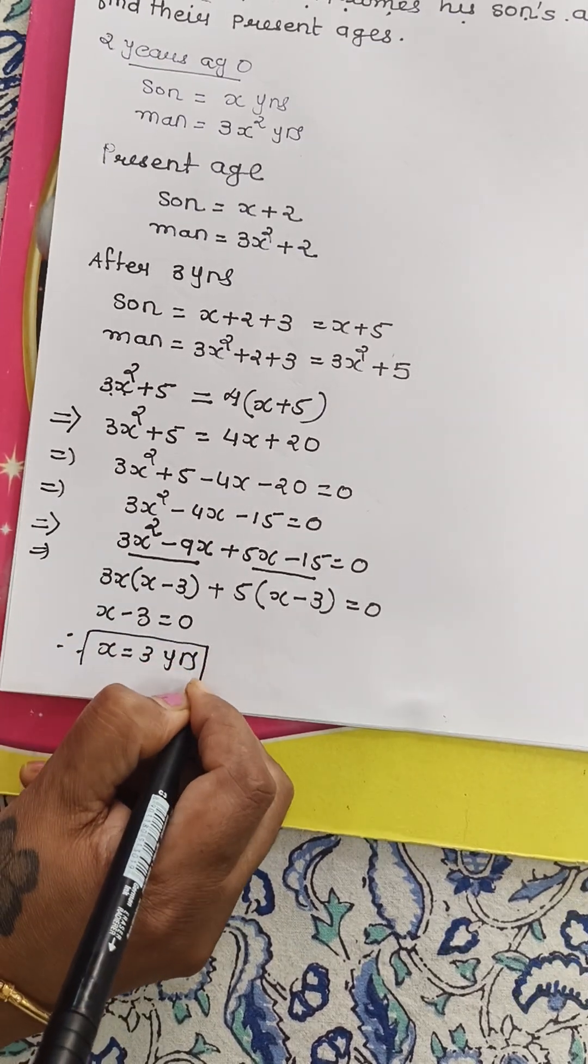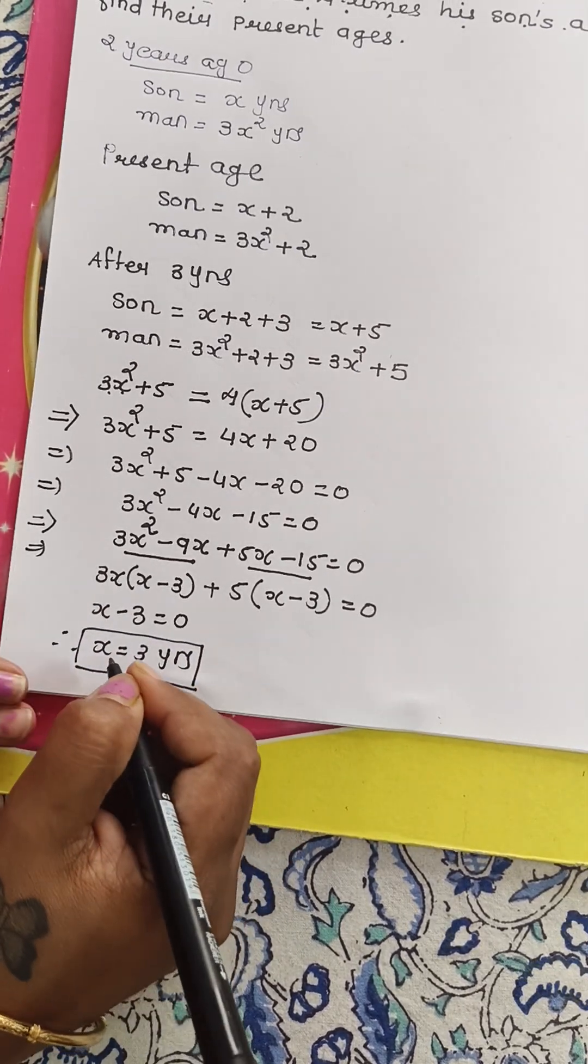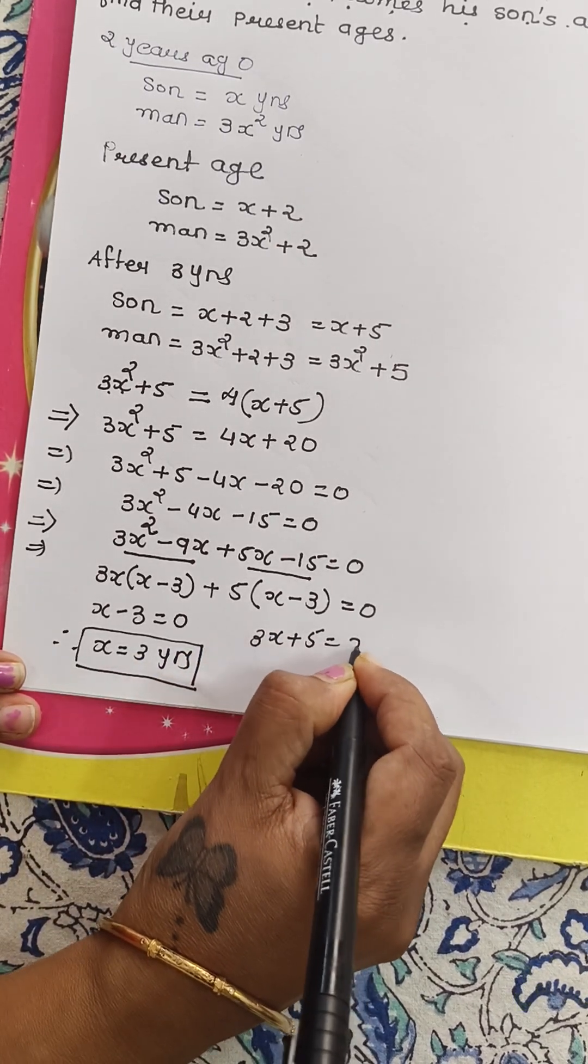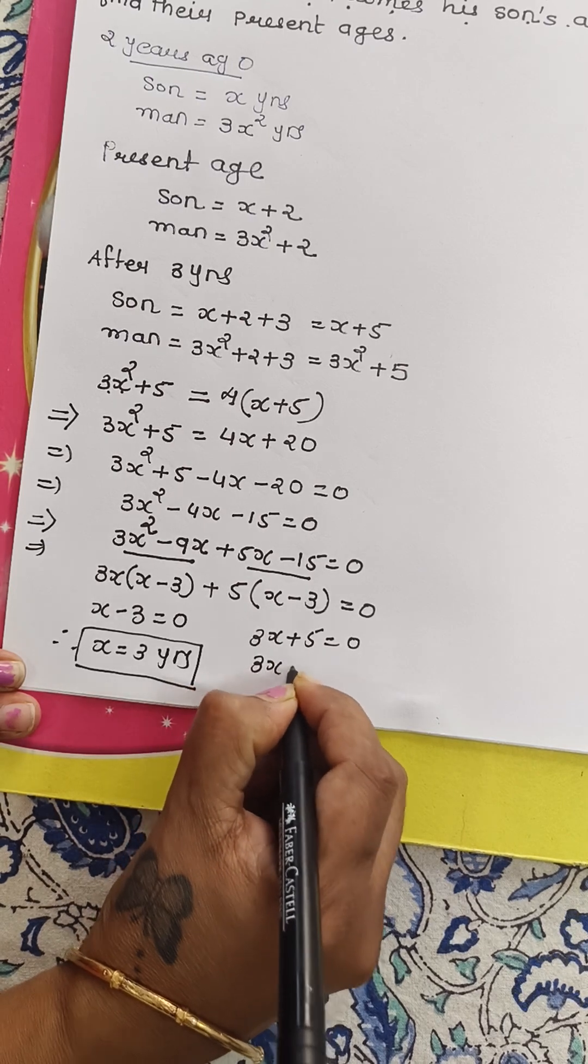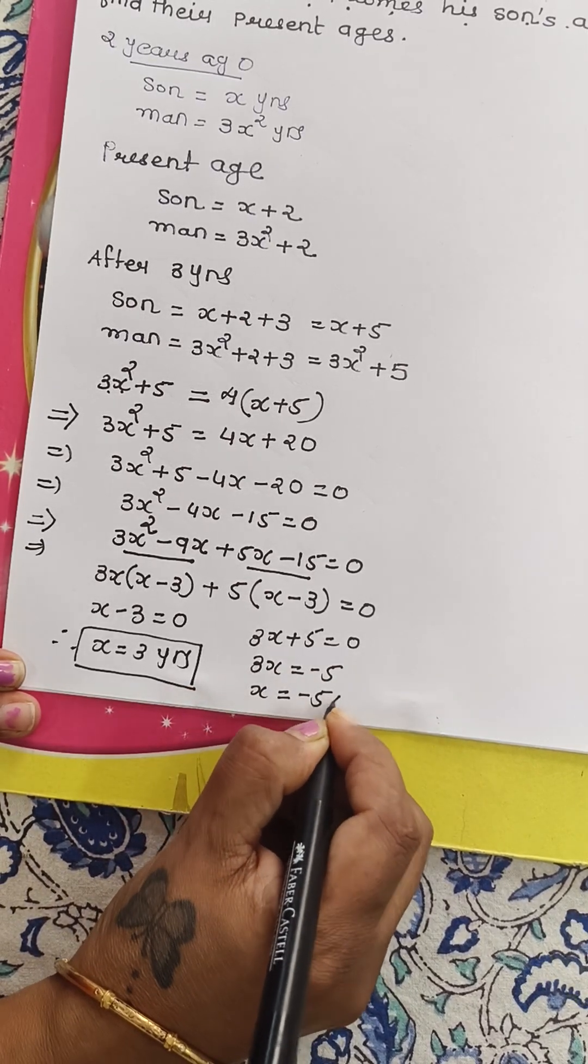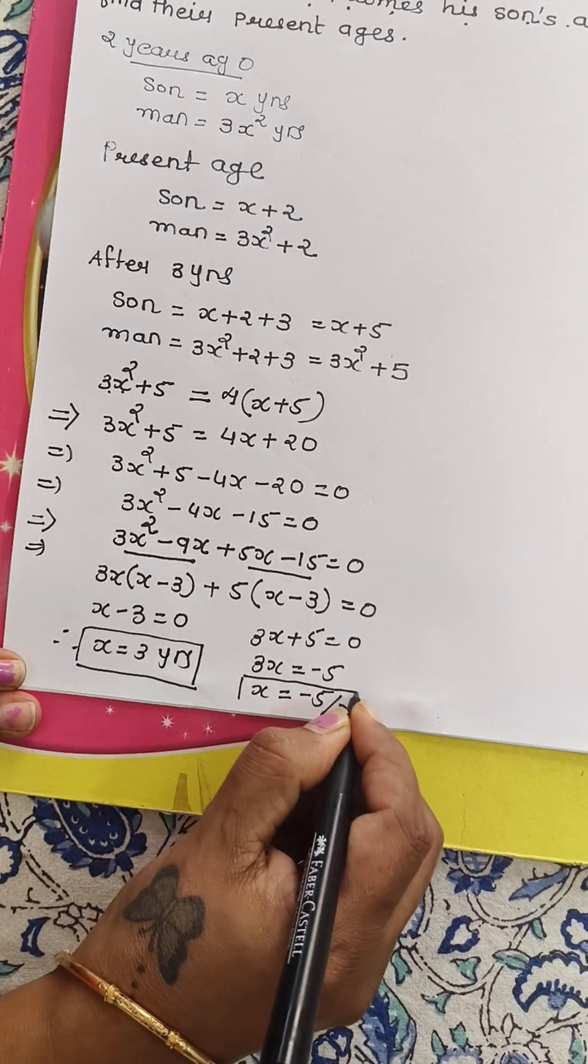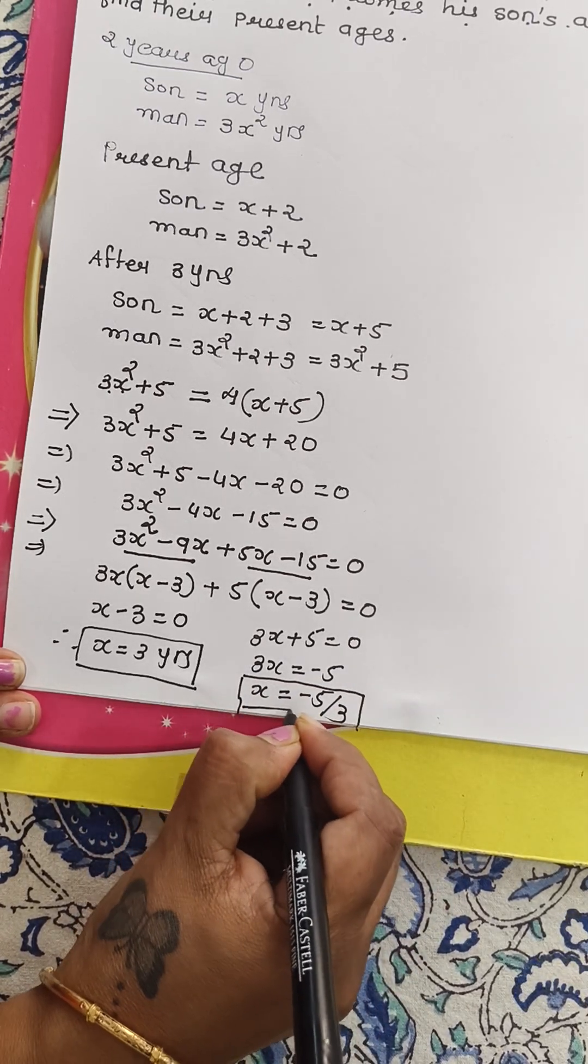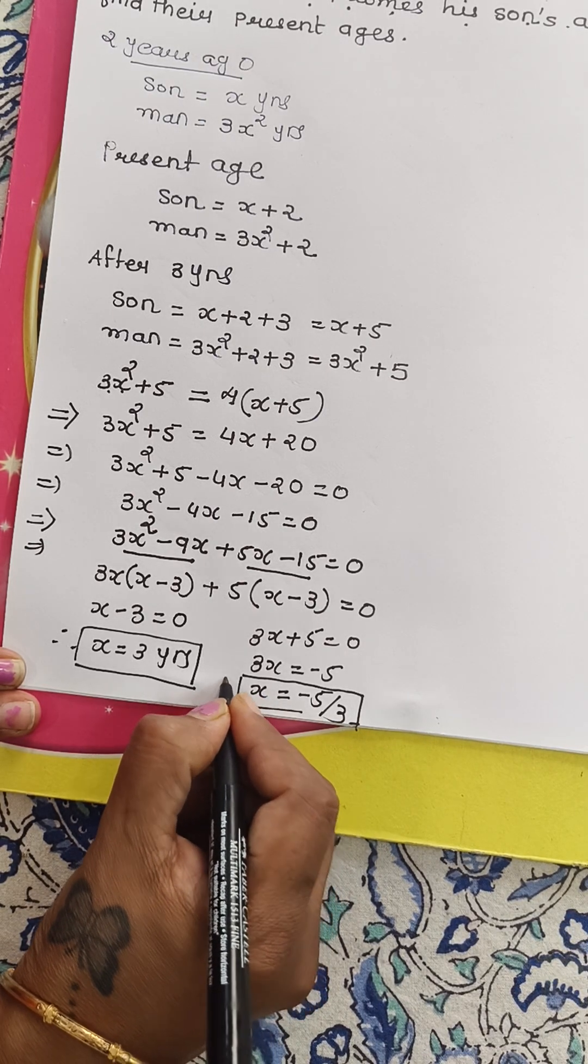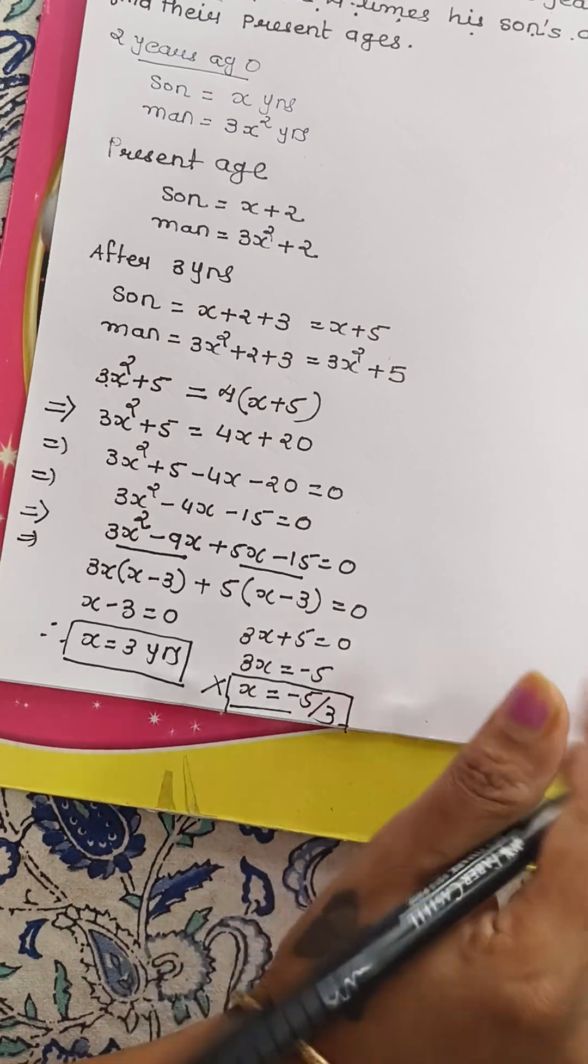One answer is X is equal to 3 years. Second, 3X plus 5 equals to 0. Therefore, 3X is equal to minus 5. So X is equal to minus 5 by 3. So this value of X is not our answer because age is not in a negative number. So this won't be the answer.